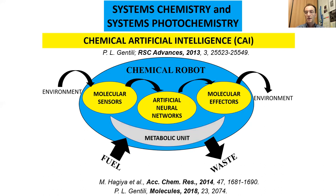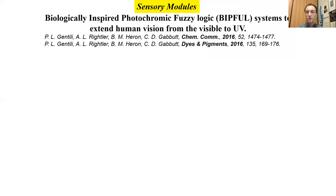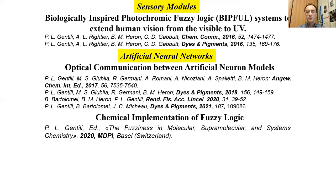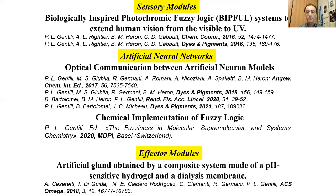The chemical robot should be easily miniaturized and implanted in living beings to interplay with cells or organelles for biomedical applications, and should become an auxiliary element of the natural immune system. So far we have devised sensory models — for instance, biologically inspired photochromic phasologic systems that extend human vision from the visible to the UV. We are contributing to the implementation of artificial neural networks by proposing specific chemical systems to mimic neural dynamics and investigating temporal synchronizations through optical communication. We are also proposing molecular and supramolecular system chemistry to implement phasologic computing, and developing effector models such as an artificial gland made of a pH-sensitive hydrogel and a dialysis membrane.